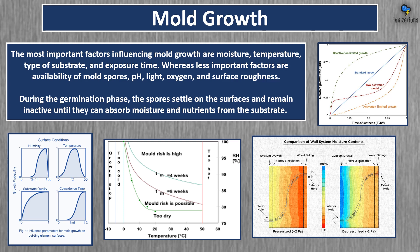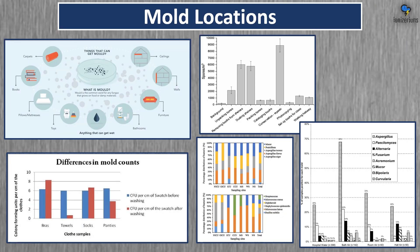During the germination phase, spores settle on surfaces and remain inactive until they absorb moisture and nutrients from the substrate. Basically, when you have high humidity you're going to have more mold in your home. Mold can grow anywhere — it's commonly found in carpets, books, beds, toys, bathrooms, furniture, walls, ceilings, clothes, and even hospital water.